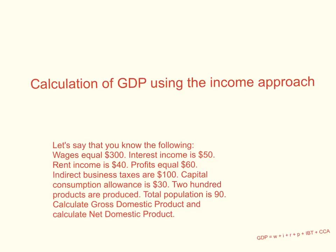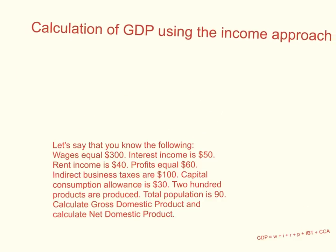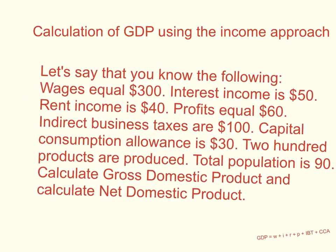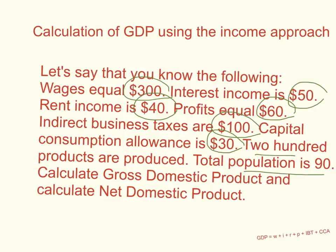Hello, it's John Bauman, and here we have a GDP calculation question. The following information is given: wages are $300, interest income is $50, rent for landlords is $40, profits for business owners is $60, taxes — income to the government — is $100, capital consumption allowance is $30, we're producing 200 products, and the population is 90. We're asked to calculate gross domestic product and then net domestic product.